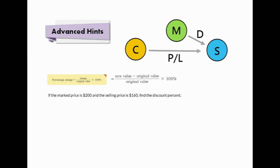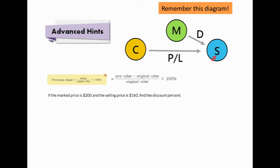We can also use these two formulae to solve problems involving discount, gain, and loss. We have to pair up the terms correctly with the formulae. C means cost price, M means market price, S means selling price, D means discount, and P or L means profit or loss. The arrow from M to S means from original value to new value — the change from M to S is called discount. The arrow from C to S similarly means from original to new value — the change from C to S is called profit or loss.